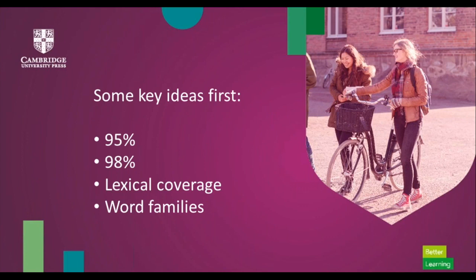I wanted to start with some key ideas. The first three relate closely to each other: 95% and 98%. This is a central idea around how many word families learners need to know to comprehend what they're listening to or reading. At 95%, learners should be able to comprehend but they're going to need some help. At 98%, research shows that if learners know 98% of the vocabulary in what they're listening to or reading, they should be able to cope with it on their own. So: 95% — help me; 98% — I should be okay.